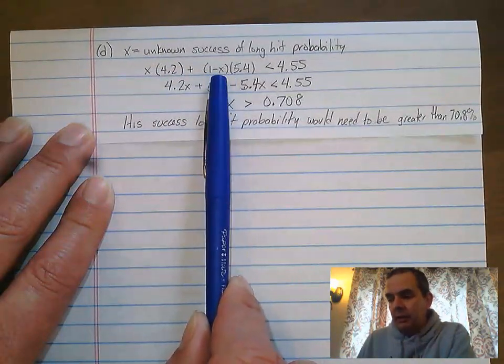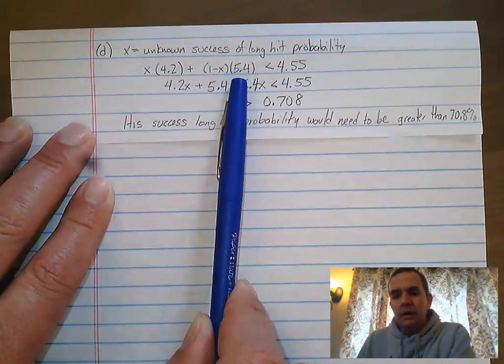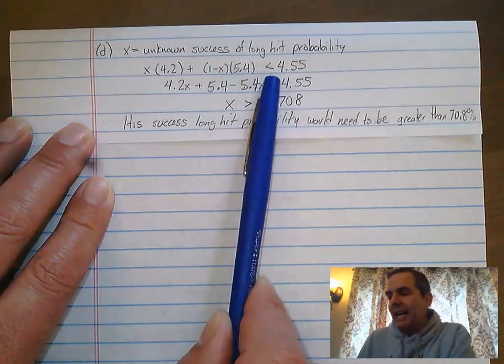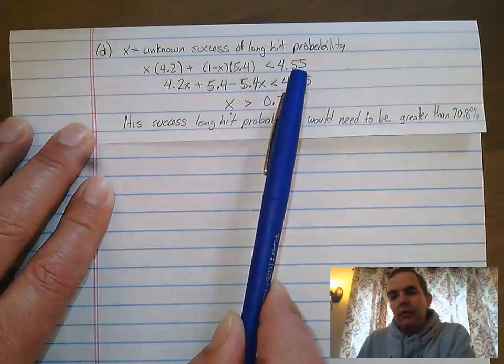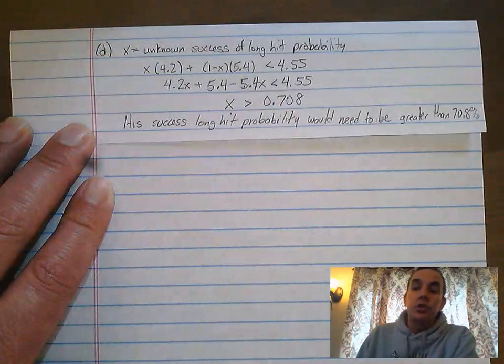1 minus X, which is your failure, times 5.4, that's his expected value on a failed long hit. And it has to be less than 4.55. 4.55 was his expected value on the short hit.